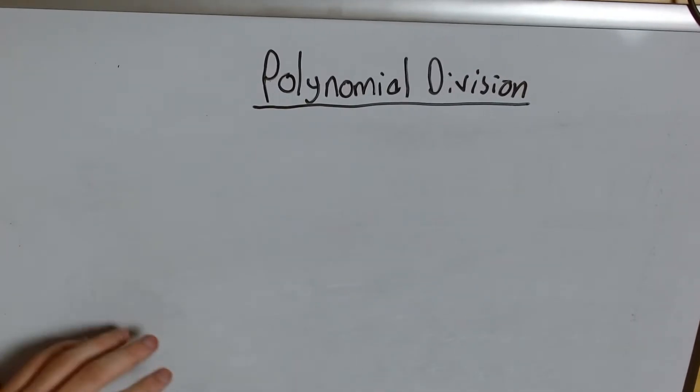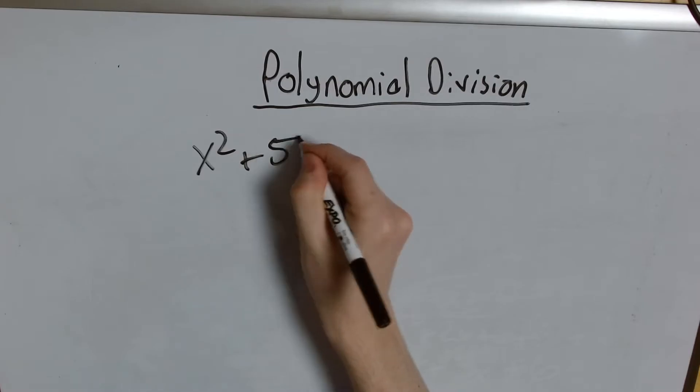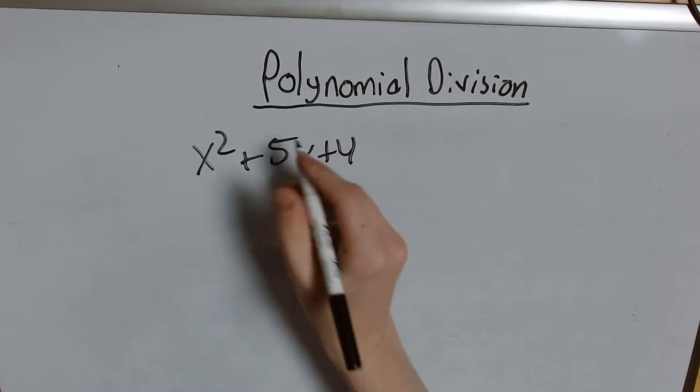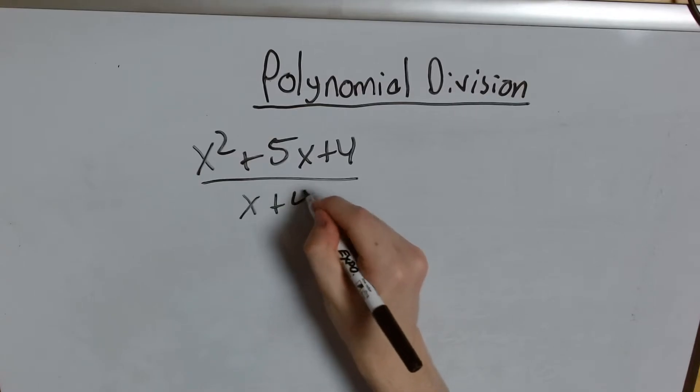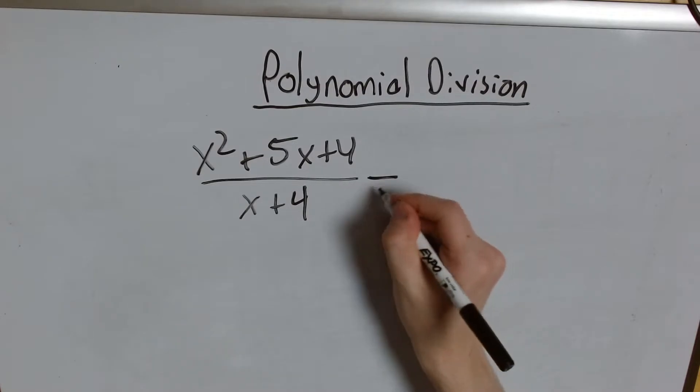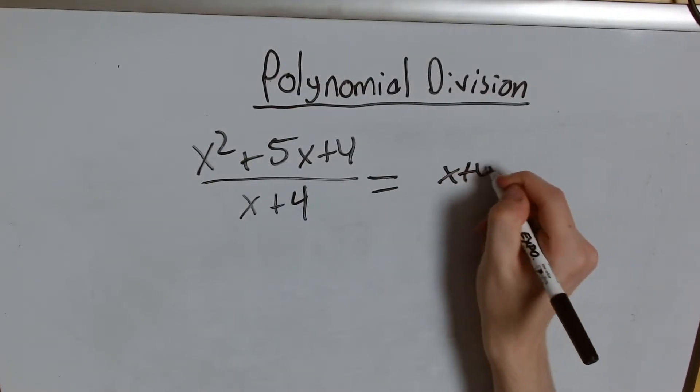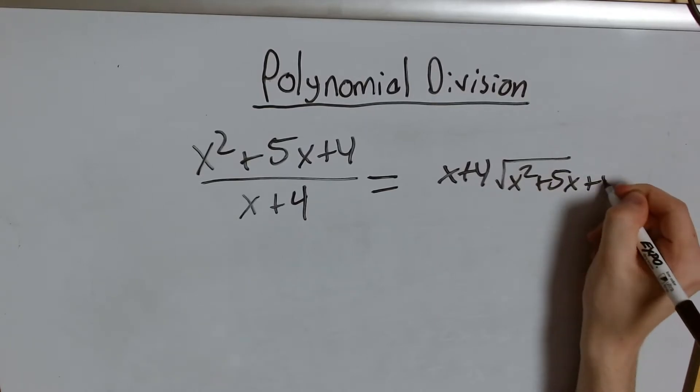Say I have let's see I want to be a good quadratic. Oh I know x squared plus 5x plus 4 over x plus 4. Now let's divide out x plus 4 and then x squared plus 5x plus 4.